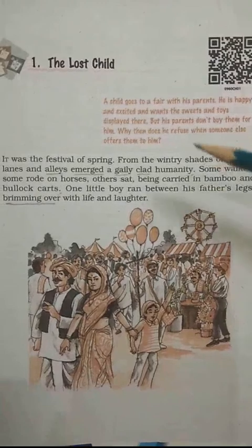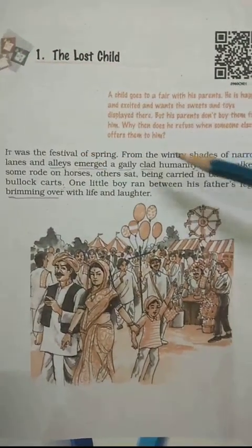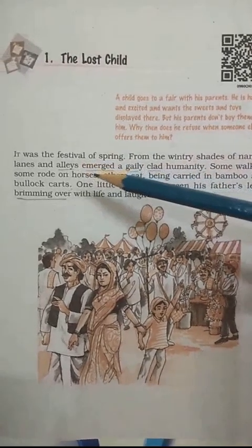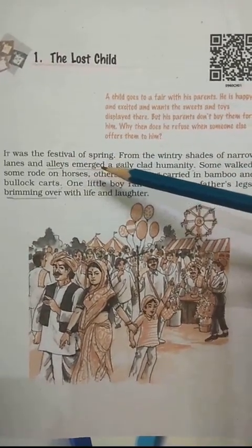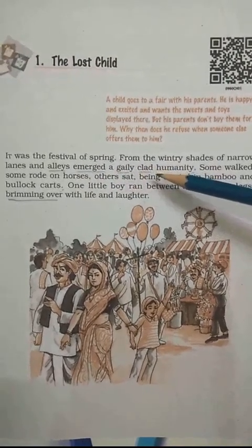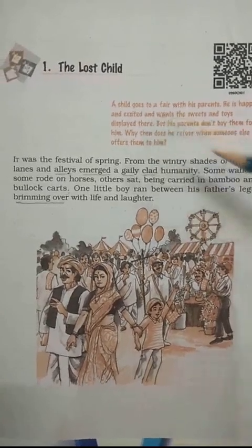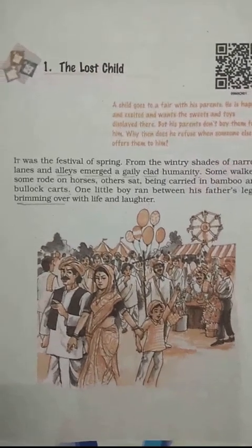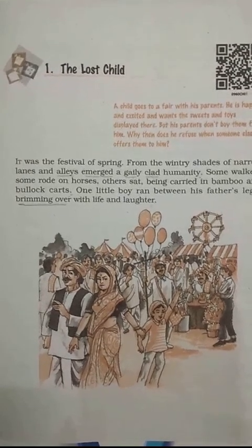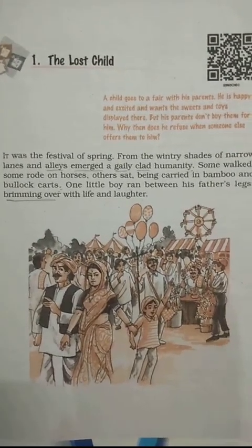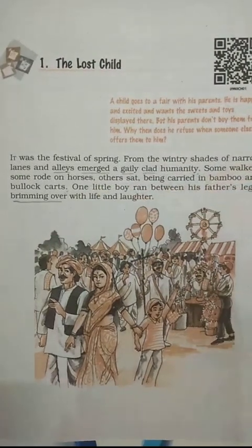Let us begin with the very first paragraph of the story: 'It was the festival of spring. From the wintry shades of narrow lanes and alleys emerged a gaily clad humanity.' Here 'alleys' means narrow way, 'emerged' means came out, 'gaily' means happily, 'clad' means wearing, and 'humanity' means mankind or human beings. The story is set in the spring season — as winter had just ended, all the people being cheerful and dressed up beautifully came out of their houses.